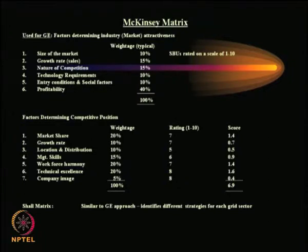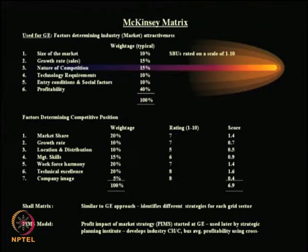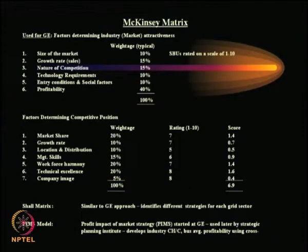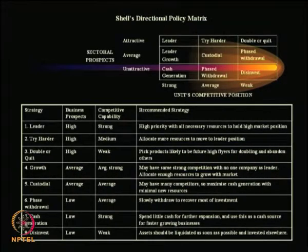The next matrix is what is called the McKinsey matrix, again used by the General Electric company. What has been presented is adapted as a typical Indian company's table on industry attractiveness and competitive position, as described on page 127 in the book. The McKinsey matrix used by the GE company has been given with a slight modification. The Shell company also came out with a Directional Policy Matrix, as shown in figure 7.7 of the book.